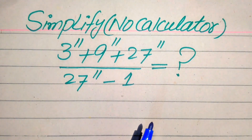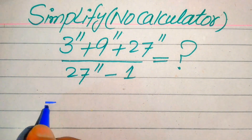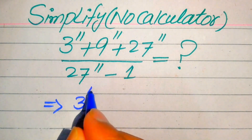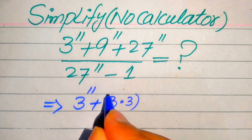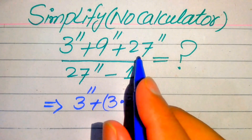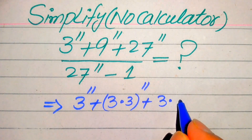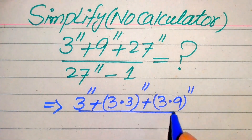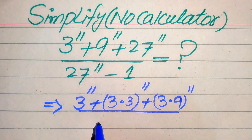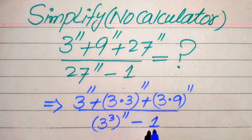In order to simplify this expression, first we need to rewrite these terms. So we have 3 to the power of 11, plus we write 9 as 3 multiplied by 3 with whole power 11, plus we write 27 as 3 multiplied by 9 with whole power 11, divided by 27 written as 3 cubed with whole power 11, and minus 1.